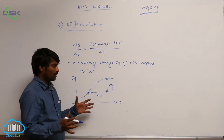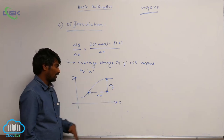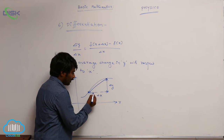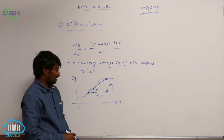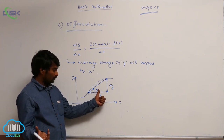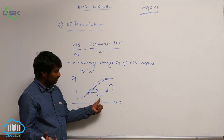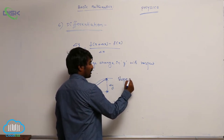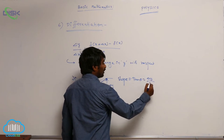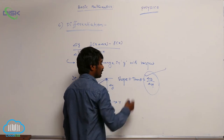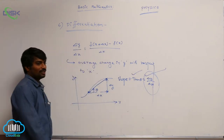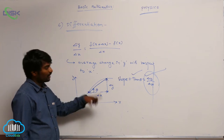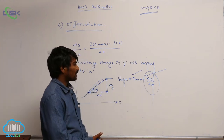From the graph, to calculate the average change in y with respect to x, I join those two points with a straight line. The anticlockwise angle made by this straight line with the x-axis is theta, and tan theta gives the slope. So tan theta equals delta y by delta x, meaning the slope of the straight line equals the average change in y with respect to x.